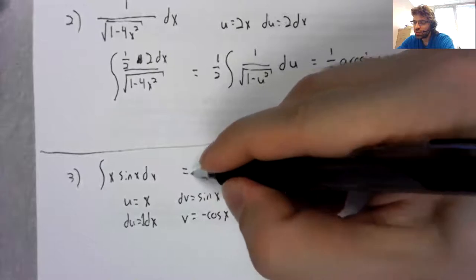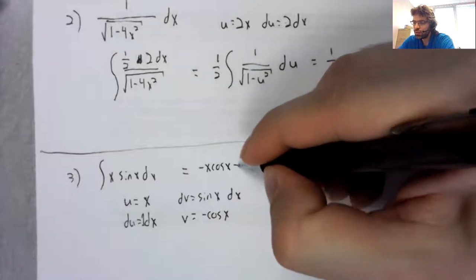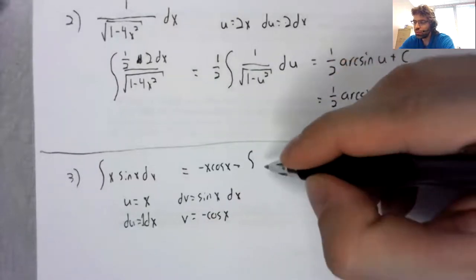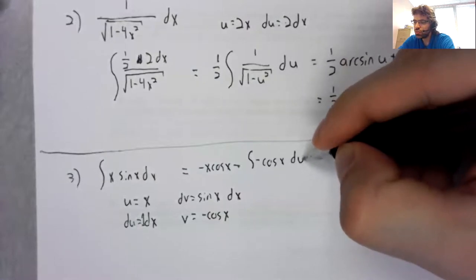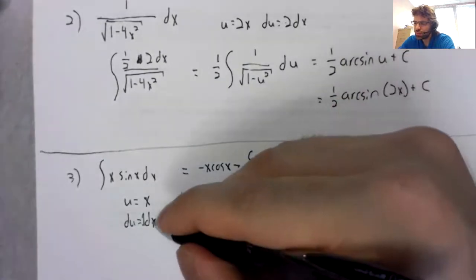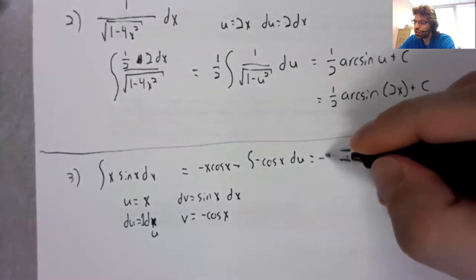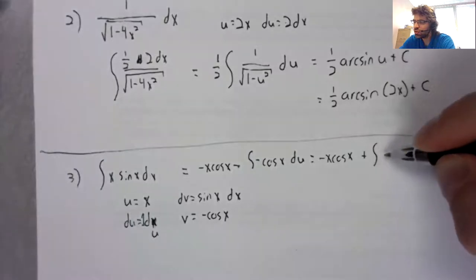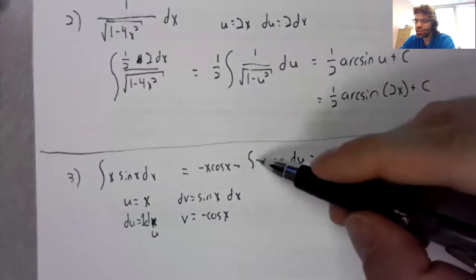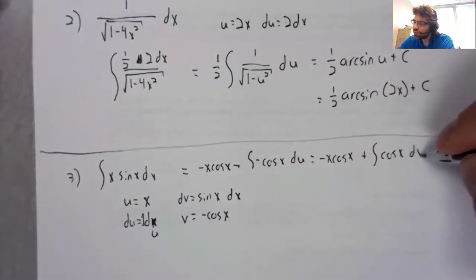And this is uv minus the integral of vdu. So, negative x cosine x plus this—the negative and the negative cancel.